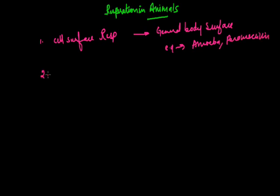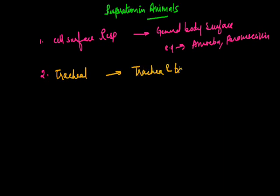The second type of respiration is tracheal respiration. This occurs with the help of trachea and tracheoles, and is very common in insects.